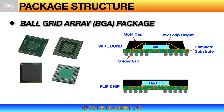Ball grid array, or BGA, is used for high pin count applications, specifically for high pin count ICs. It uses a laminated substrate made of layers of copper and prepreg. BGA has many different configurations — one example is a typical die-attached wire-bonded die configuration, which requires thin die and low loop height. Another configuration uses a flip chip die, and it can also be a combination of wire bond and flip chip die in a multi-chip application.